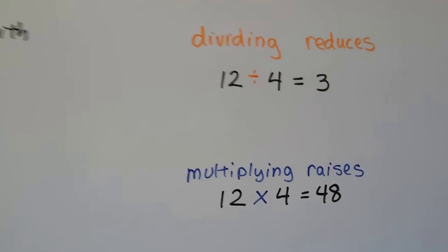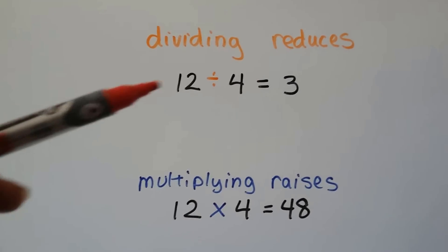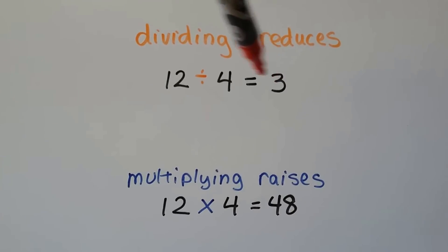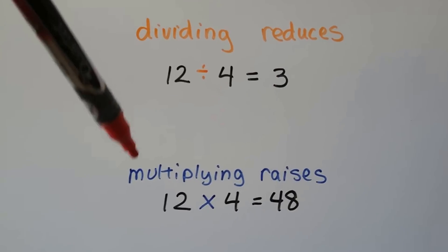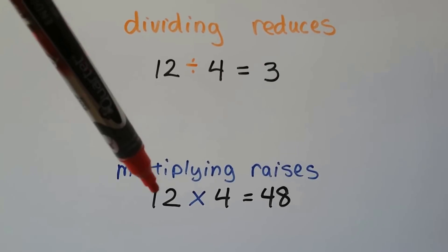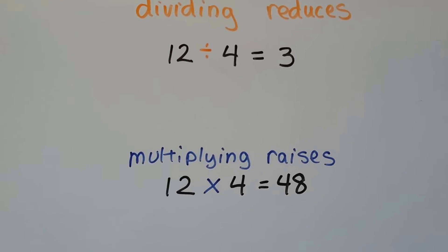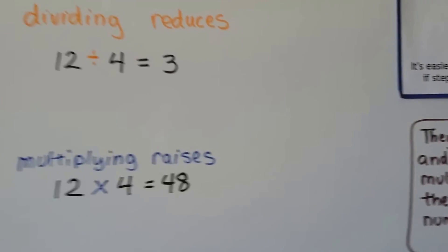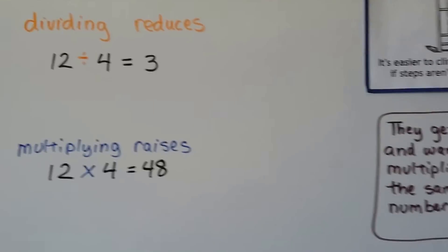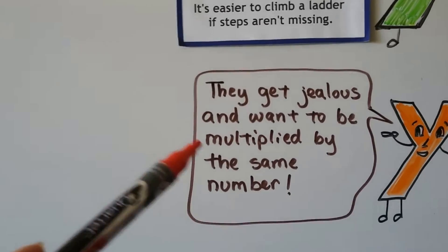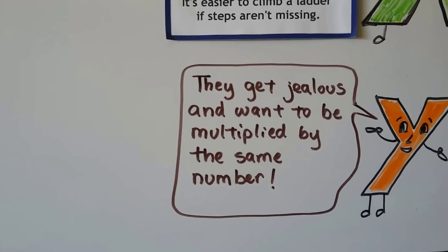So dividing will reduce. 12 divided by 4 is going to be 3, so we get a smaller number than the 12. And multiplying raises it. If we multiply by 4, it's going to make it bigger than the 12. So just remember whether you're reducing or raising, the numerator and denominator get jealous and want to be multiplied or divided by that same number.